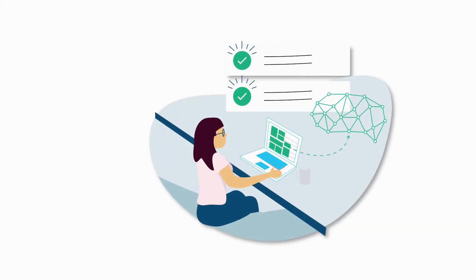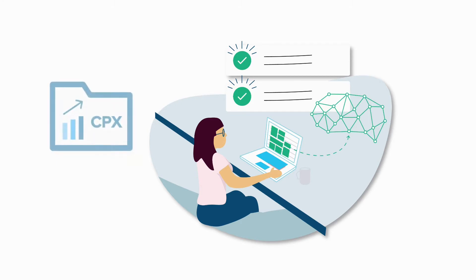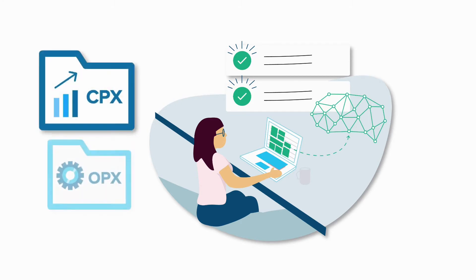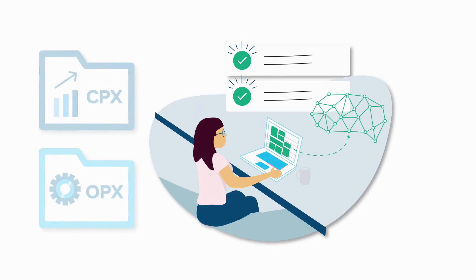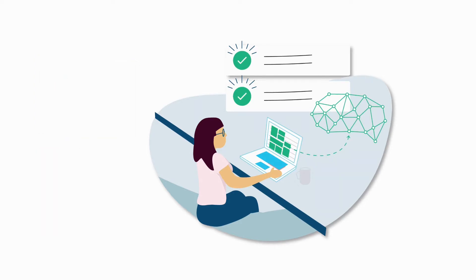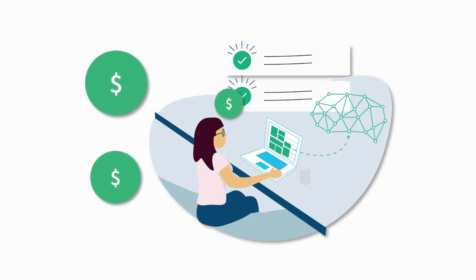Let's say that your team has been working on a project and logging their time to both CapEx and OpEx accounts in Tempo Timesheets. You know how many hours have been logged to these Tempo accounts, and now you want to put a dollar amount to those hours and also track other expenses related to these accounts.